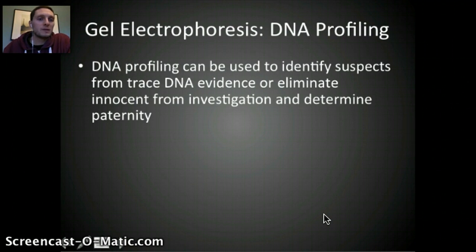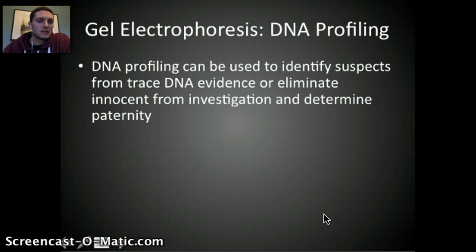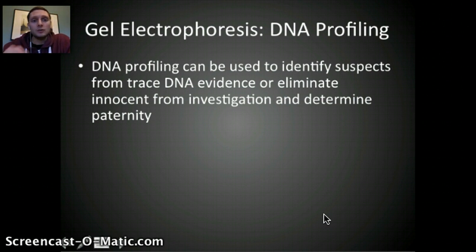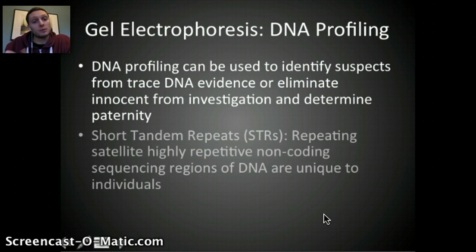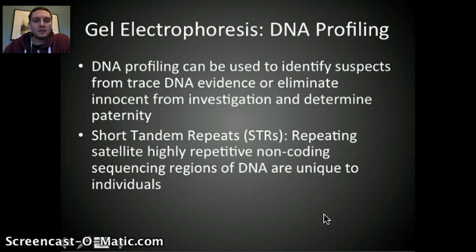Through gel electrophoresis and PCR, we can use these for a couple of different applications, including DNA profiling. DNA profiling can be used to identify suspects from very small trace samples of DNA evidence, and more importantly it can eliminate innocent individuals from investigation. It can also be used to determine paternity. Pretty much every person has their own unique DNA, except for identical twins. By looking at specific regions of each person's DNA, we can examine specific genetic markers or bands and compare individuals' genetic markers to make a genetic profile.